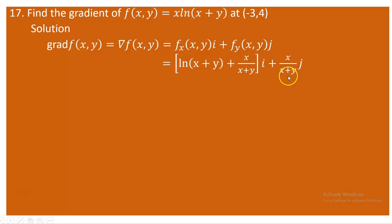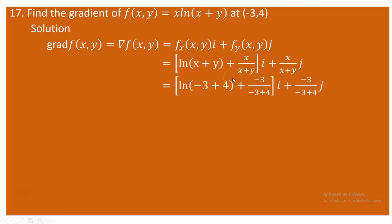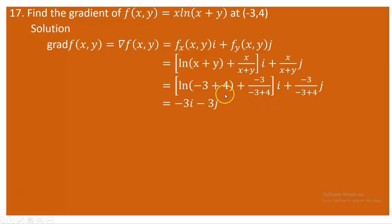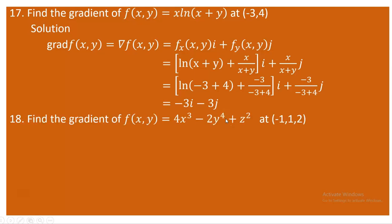Evaluating the gradient at (-3, 4): substituting x = -3 and y = 4, we get ∂f/∂x = ln(-3+4) + (-3)/(-3+4) = ln(1) + (-3)/1 = 0 - 3 = -3, and ∂f/∂y = (-3)/(-3+4) = -3. So the gradient is -3·i - 3·j, which is the normal vector to the surface at the point (-3, 4).